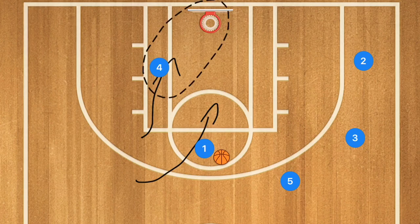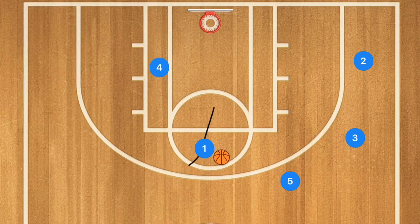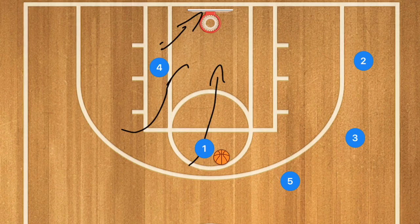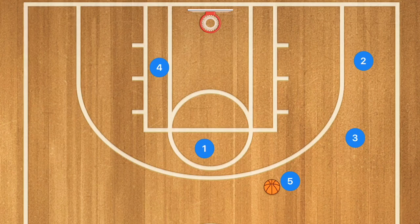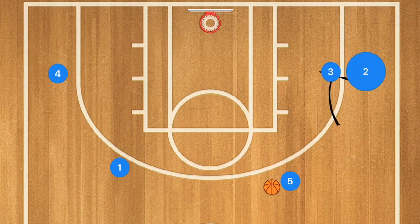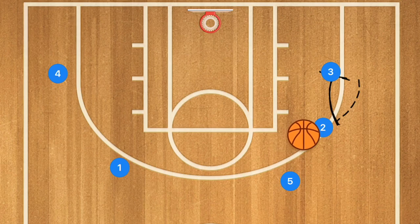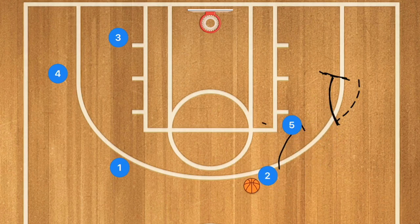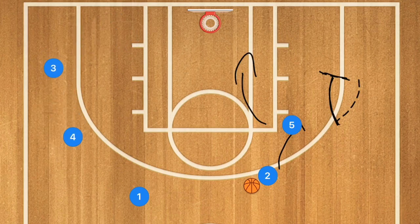We're looking to have player four hit that layup or player one taking that mid-range shot. Now if the drive or the layup off of player four rolling towards the basket is not open, player one passes over to player five. Once player five gets that ball, he's going to be passing over and having player three either screen for player two — this is one option — while player one and four are popping out.